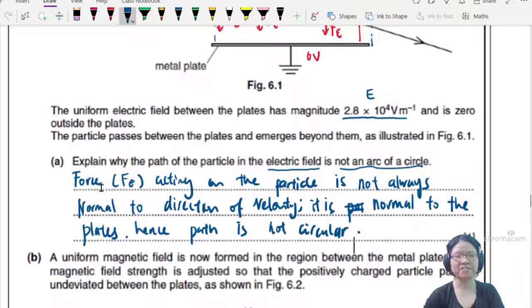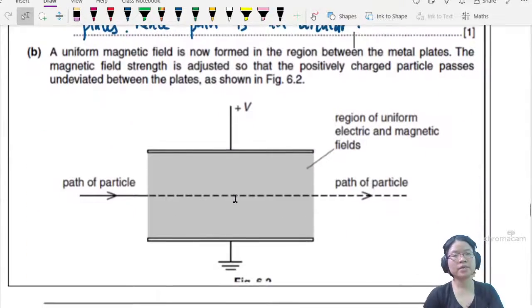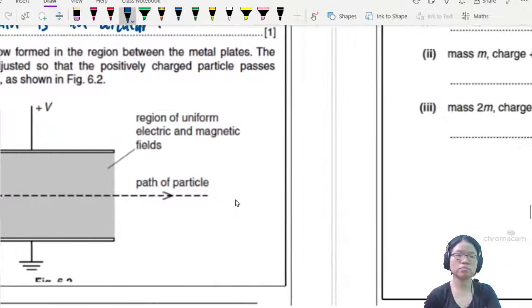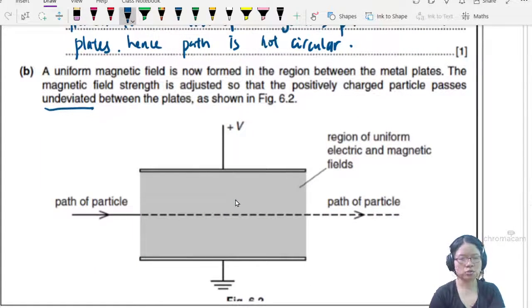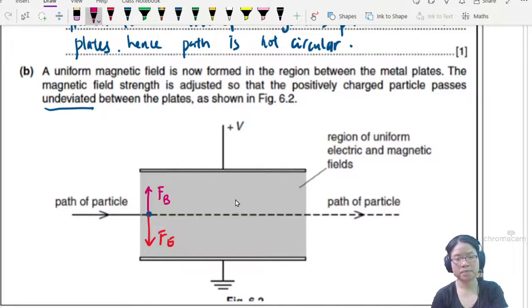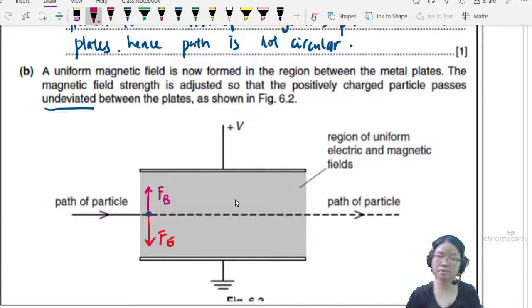Next, uniform magnetic field is now formed in the region between the metal plates. The magnetic field strength is adjusted so that the positively charged particle passes undeviated between the plates. State and explain the direction of the magnetic field. You need to explain, but all the explanation may look the same using Fleming's left hand rule. At the same time you need to talk about the direction of FB, the magnetic force.